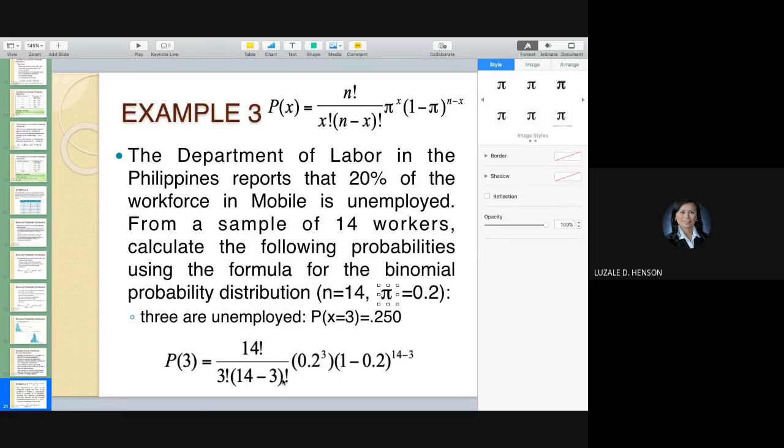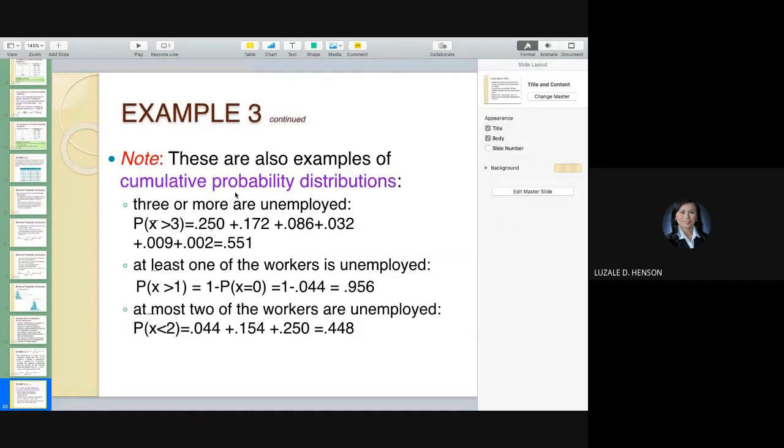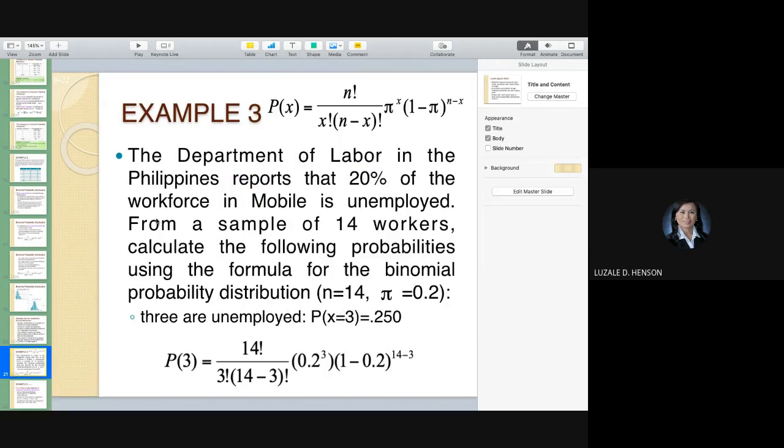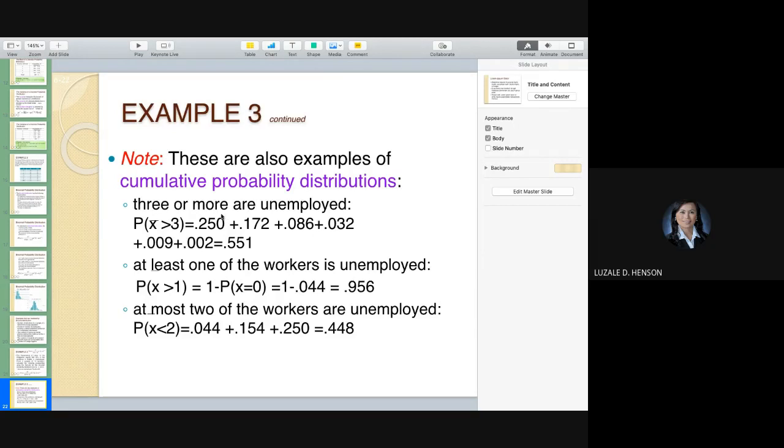Cumulative probability distributions. For example, your concern is three or more are unemployed. You already solved earlier that three are unemployed, so you have 25% likelihood that three are unemployed. What if three or more? From three, it could be four, five unemployed, six up to 14. So you compute that one by one.